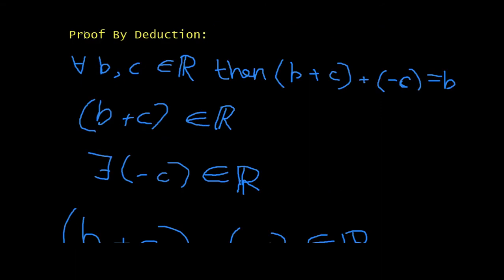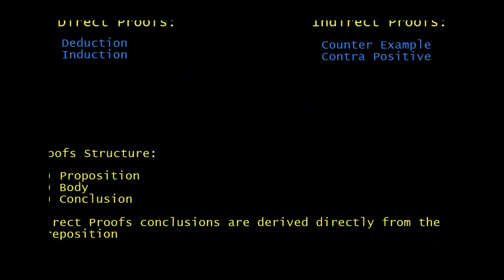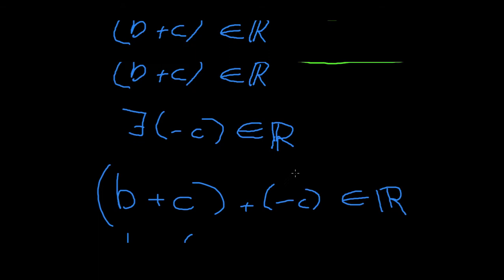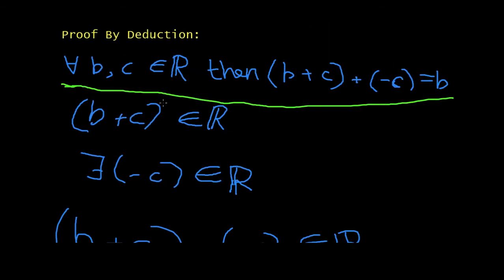And look at that. It wasn't hard. You just had to go step by step in explaining it. So let's just go from the top. For any value of b and c, where b and c are real numbers, then (b+c)+(-c)=b. This is known as a proposition. This is what you're trying to prove. Remember we said that direct proofs conclusions are derived directly from their proposition.